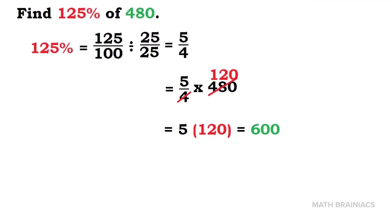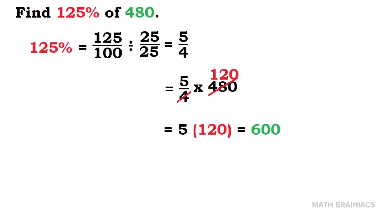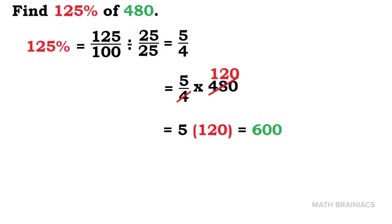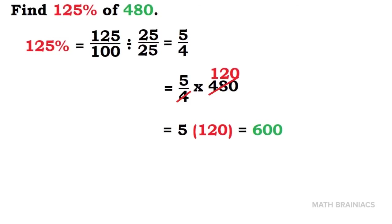To simplify the answer, 5 times 120 is 600. Therefore, 125% of 480 is 600.